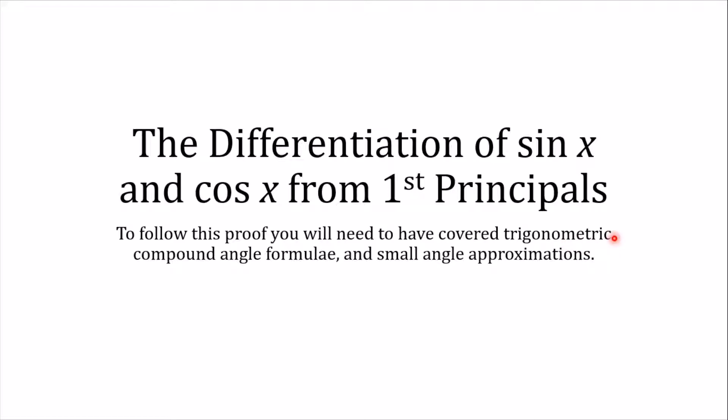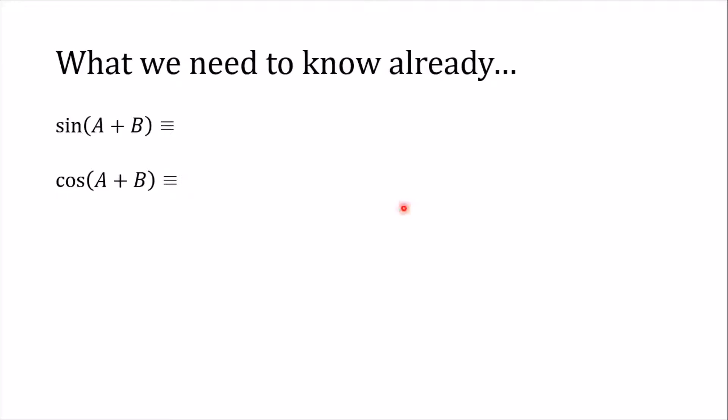So trig compound angle formulas, you need to understand or know those to follow this proof, and also the small angle approximations, and you'll see how they come in. But let's just recap those things first of all. So sine of A plus B and cosine of A plus B, you might have learned them off by heart. If not, you know where to get them in the formula booklet. So hopefully you're happy that sin(A + B) is sin A cos B plus cos A sin B, and the cosine of A plus B is cos A cos B minus sin A sin B.